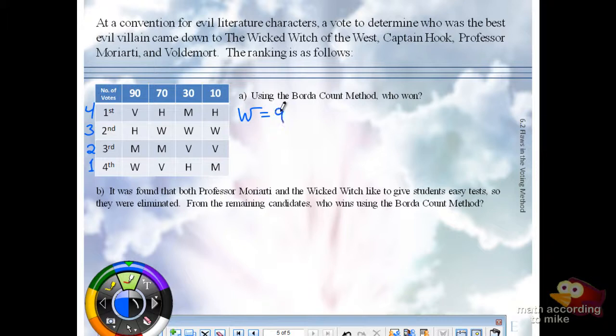For the witch, we'll do 90 times 1, plus 70 times 2, plus 30 times 4, plus 10 times 3. I got 420. Did anyone else get 420? 420. Okay.